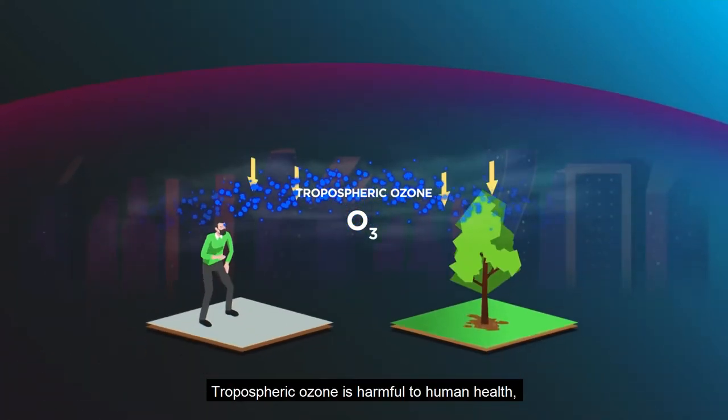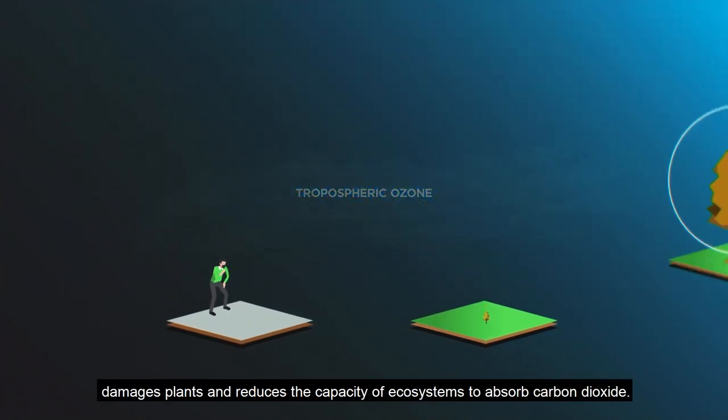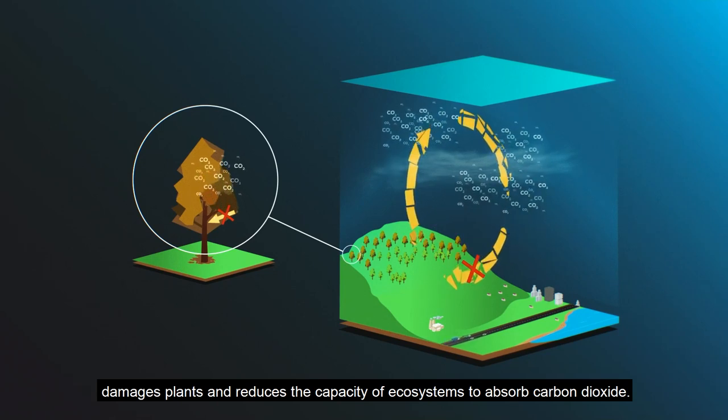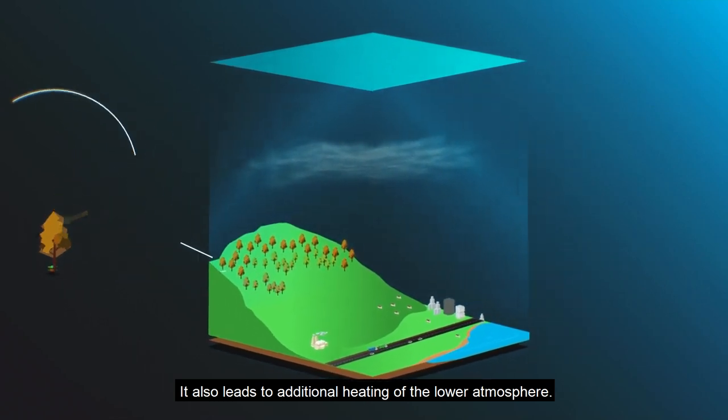Tropospheric ozone is harmful to human health, damages plants and reduces the capacity of ecosystems to absorb carbon dioxide. It also leads to additional heating of the lower atmosphere.